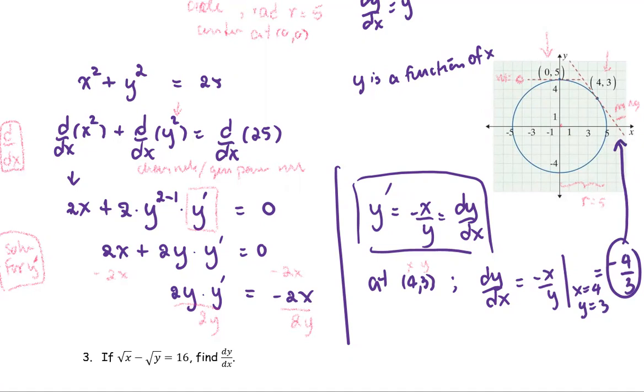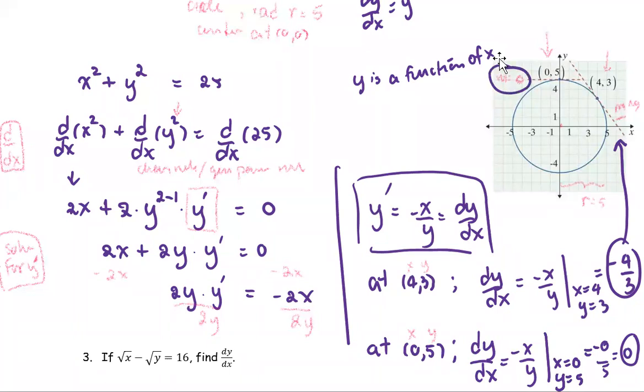This confirms what we see in the figure: a negative slope. For the other point (0, 5), x is 0 and y is 5. We compute dy/dx the same way: negative x over y evaluated when x equals 0 and y equals 5, which gives negative 0 over 5, returning 0. This is the same as our observation from the diagram.